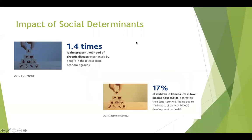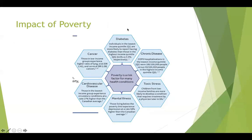There is a 1.4 times greater likelihood of getting chronic disease if you are in the lowest socioeconomic groups, and 17% of children in Canada live in low-income households, a threat to their long-term well-being due to the impact of early childhood development on health. Looking at the impact of poverty on chronic conditions — cancer, diabetes, chronic disease, toxic stress, mental illness, cardiovascular disease — the key point is that poverty is a risk factor for all of these health conditions. The numbers are significant.